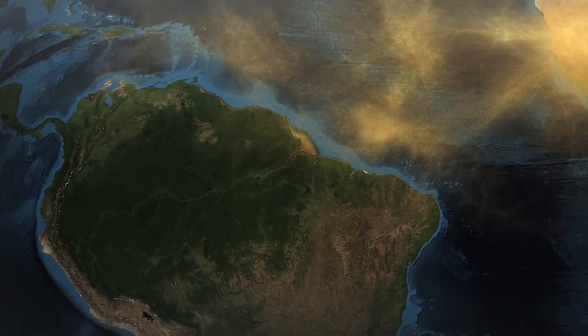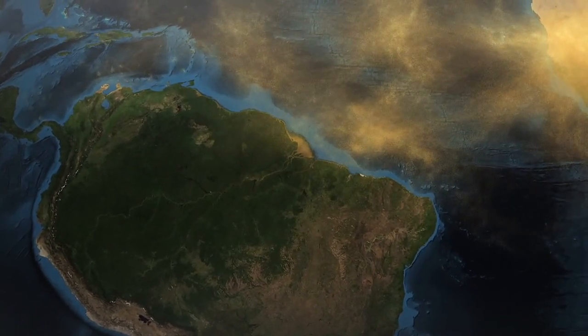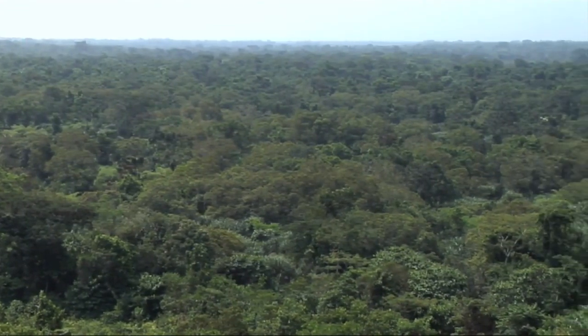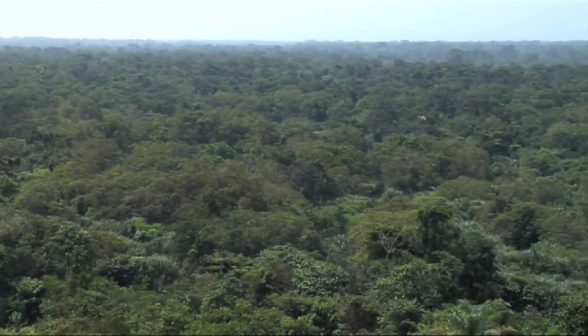Of this amount, about 27 million tons is deposited in the Amazon basin. Saharan dust contains phosphorous, which is an important nutrient for plants.